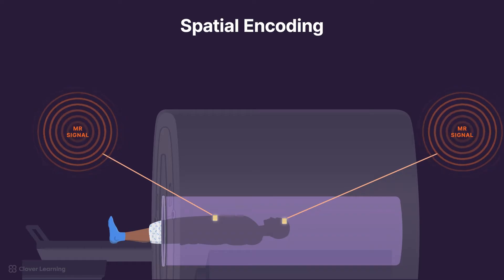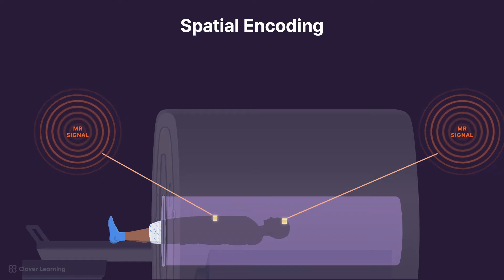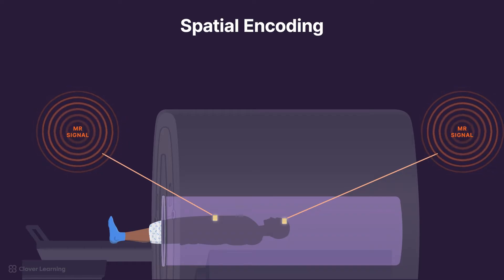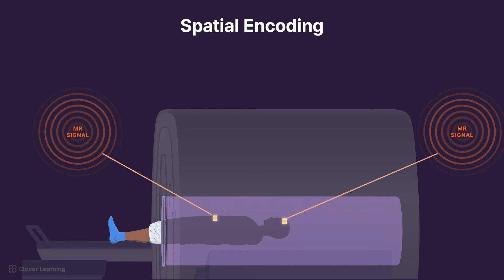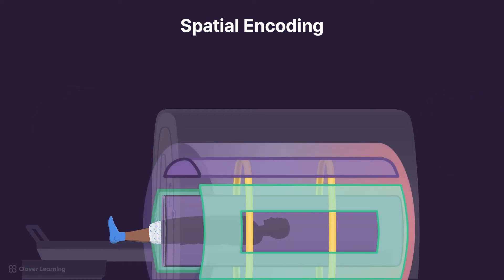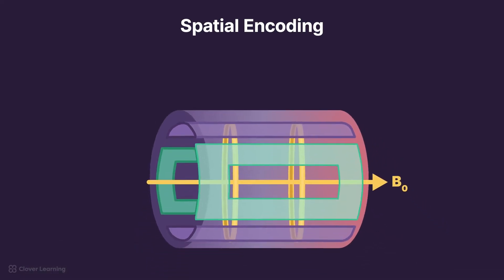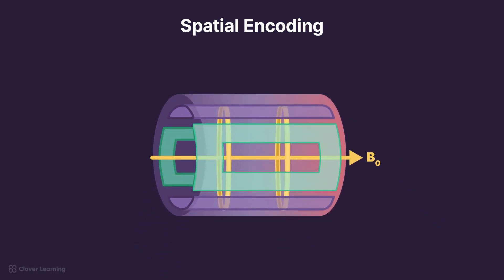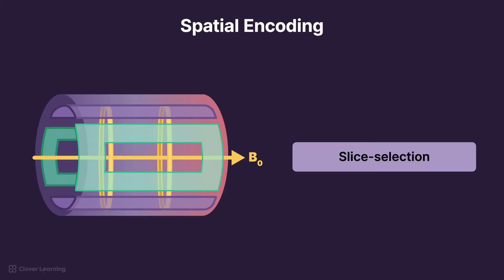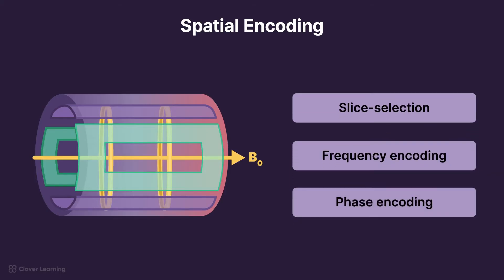Spatial encoding in MRI is how we map the location of signals within the body to create a detailed image. Spatial encoding is performed by the gradient coils in the MRI scanner, which superimpose external magnetic fields on B0, creating what is called a gradient magnetic field. Spatial encoding involves slice selection, frequency encoding, and phase encoding. Let's take a closer look at the process of phase encoding.